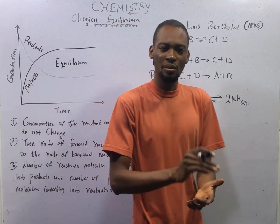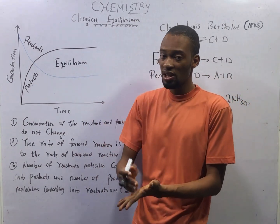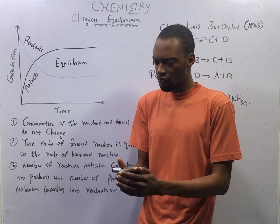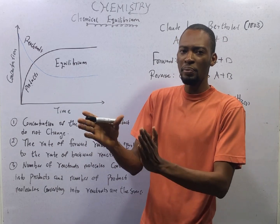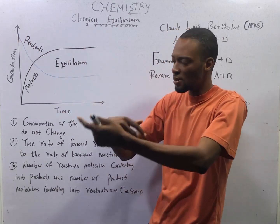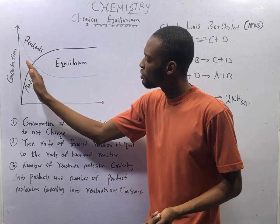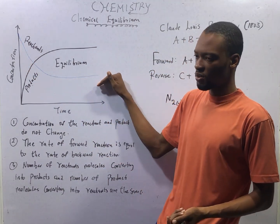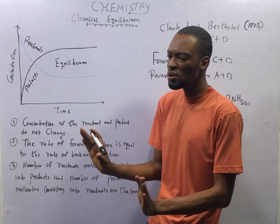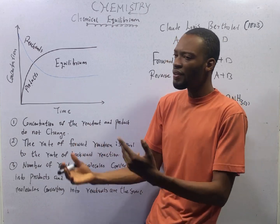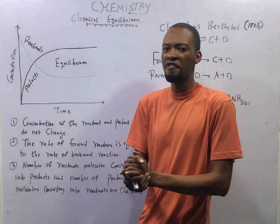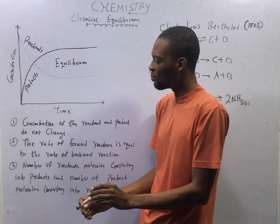To understand this class properly, you need to understand the previous episode and the last two episodes. We said that for the reactant, the concentration is maximum at the beginning of the reaction. As reaction begins to take place, concentration of the reactant begins to go down until it remains constant. For the product, at the beginning of the reaction, products are not formed yet, which means concentration of the product starts from zero. The more the reactant gets used up, the more we have formation of product. Then we get to a point referred to as chemical equilibrium.